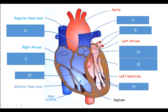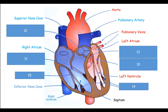Number eight: these little vessels going into the left atrium carrying oxygenated blood are the pulmonary veins — the blood has just come from the lungs where it picked up oxygen. There are two of them because we have two lungs. Number nine is the pulmonary artery, which comes from the right ventricle and splits into two parts to carry deoxygenated blood to the lungs to pick up oxygen again. Again, there are two because we have two lungs.